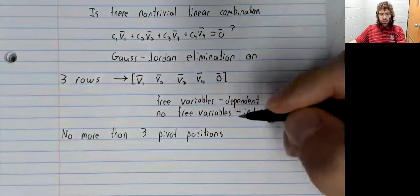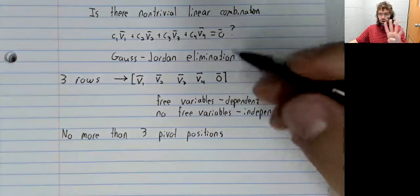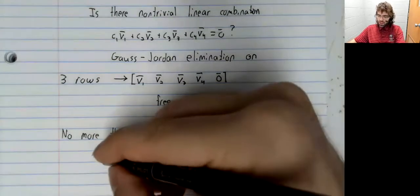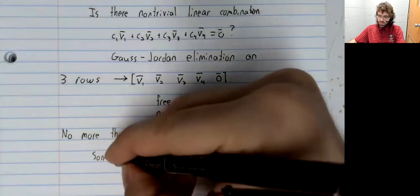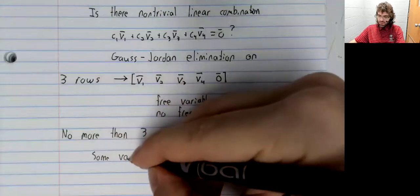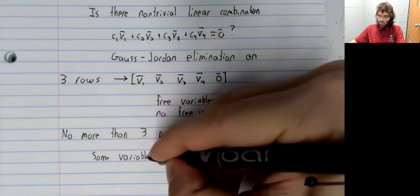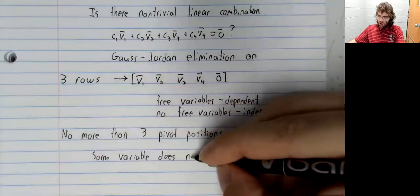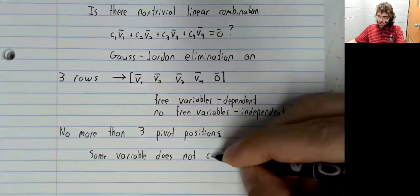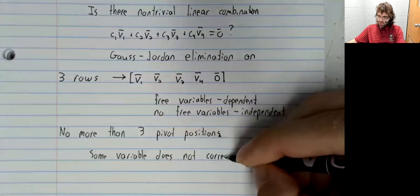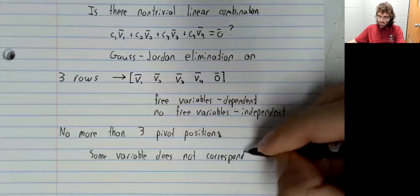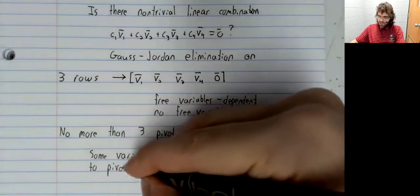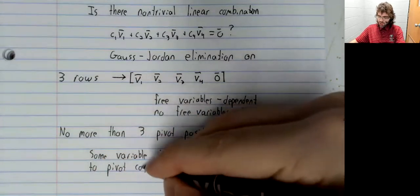But we have four variables. That means that some variable does not correspond to a pivot column.